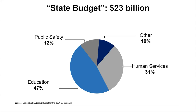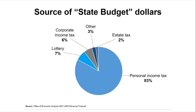Where does the money come from to pay for the state budget? The biggest source of funding is the personal income tax — the taxes that you and I pay out of our earnings. It is far and away the biggest source of funding for state budget dollars; nothing comes remotely close to it. Given its importance to Oregon's system of revenue, we're going to dive a little deeper into the personal income tax and see how it is structured.